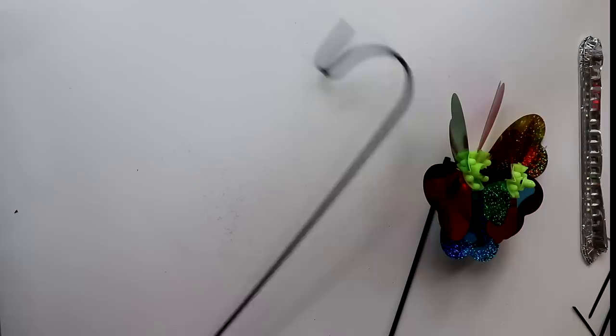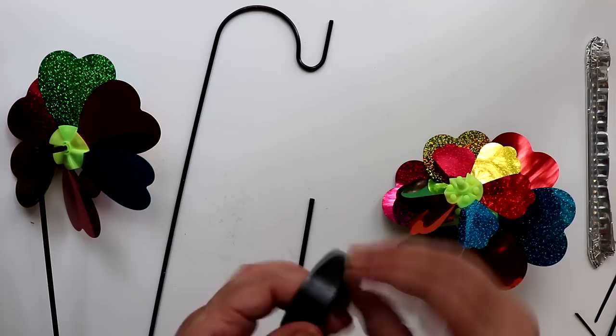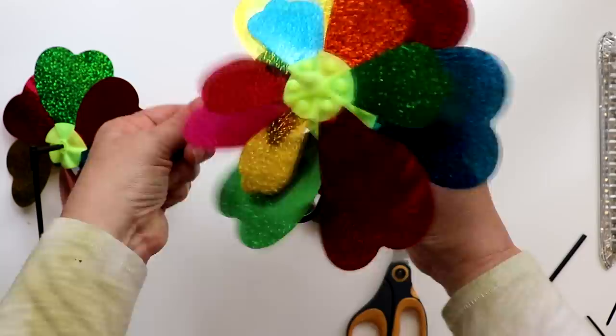Here is another quick and easy garden decor DIY again using the metal plant hanger but this time I'll be adding two of these two tier pinwheels. The first thing I did was to take a small piece of electric tape and wrap the end of the hook to widen it a bit. Next I popped the top of one of the pinwheels from the stick and then inserted that on the hook.